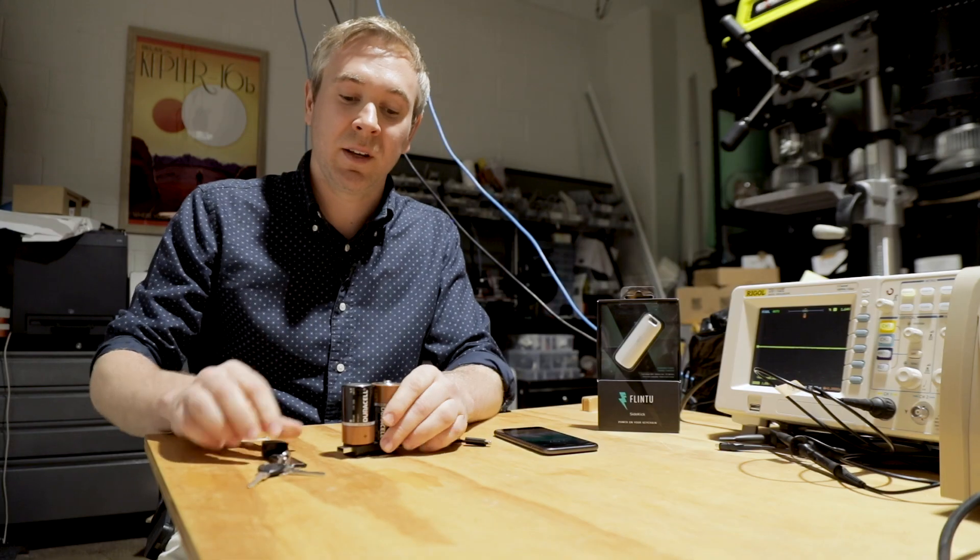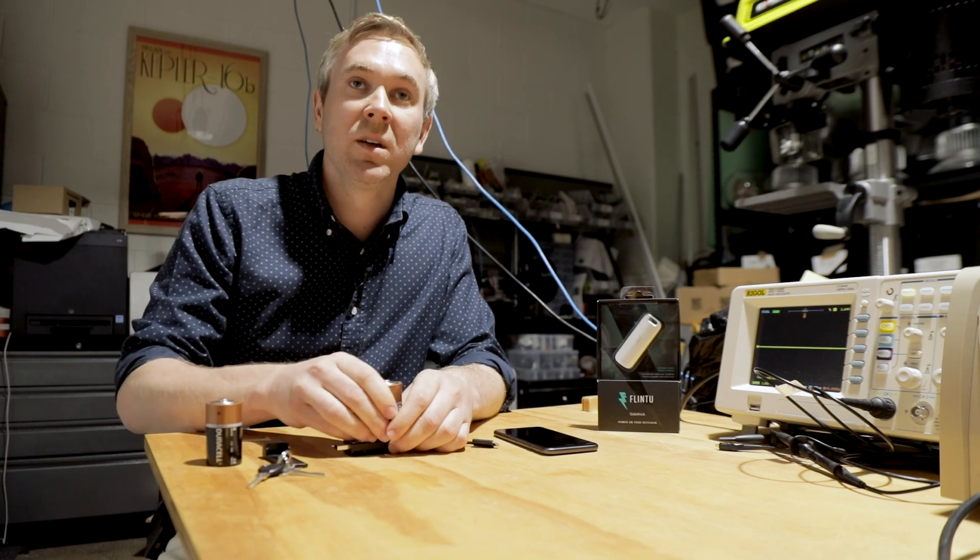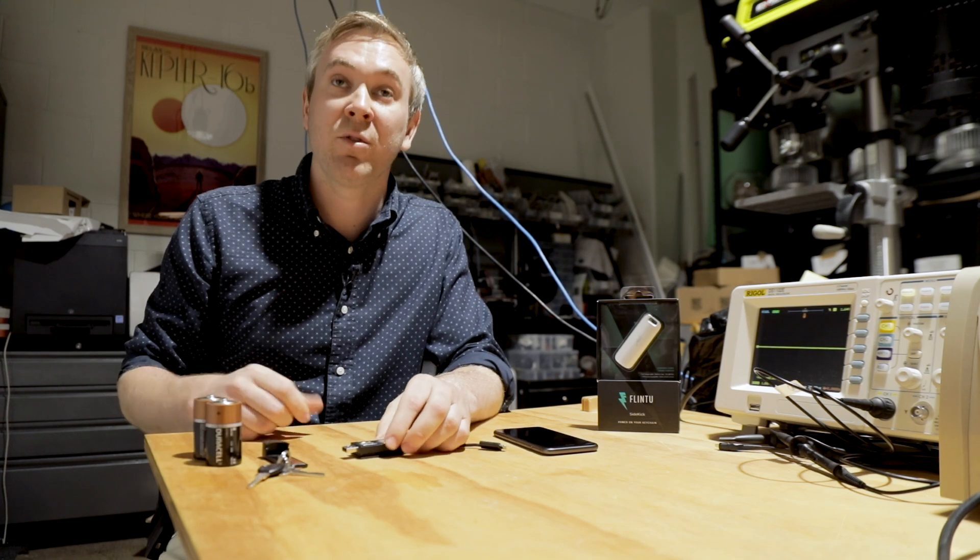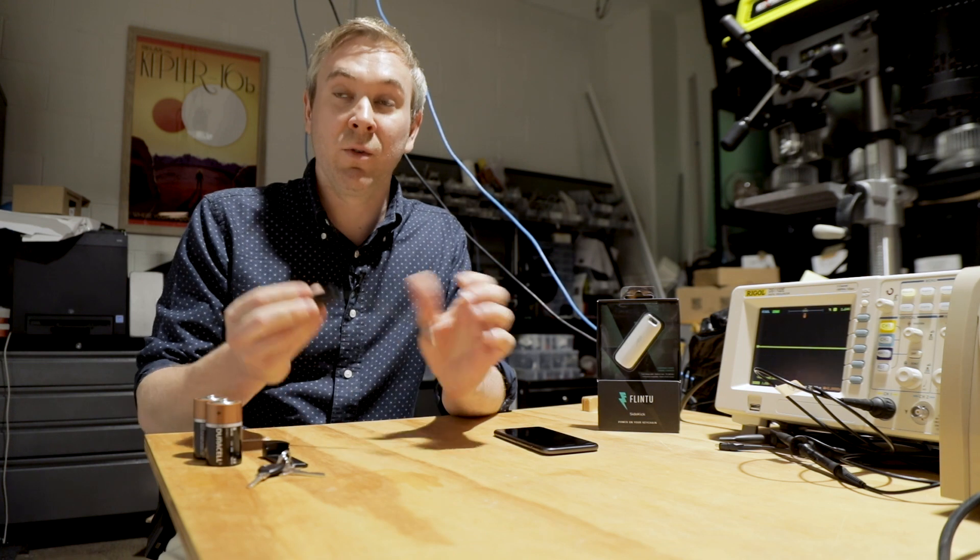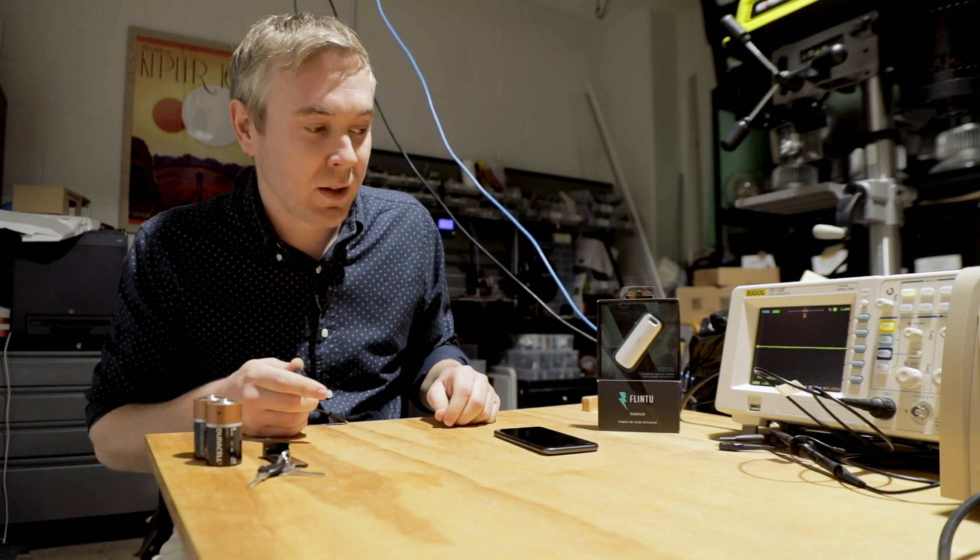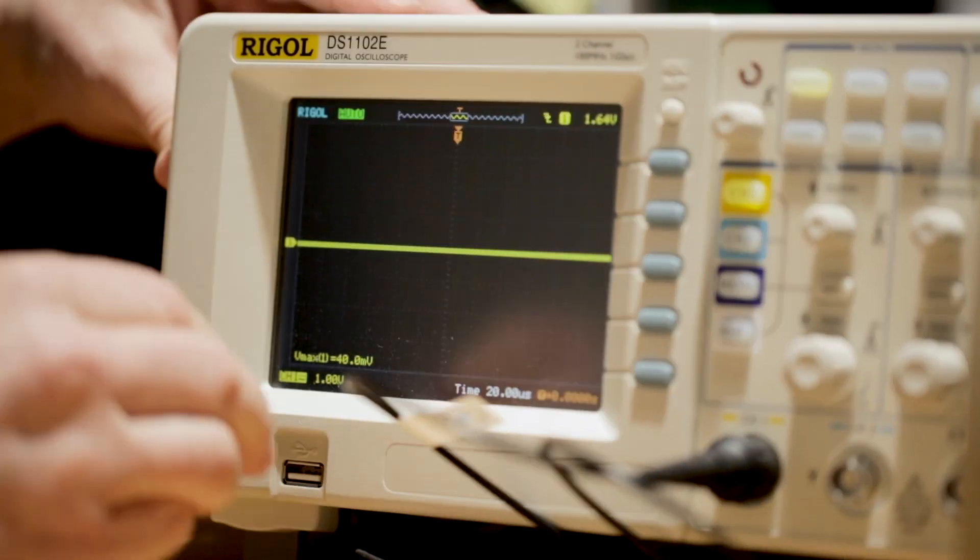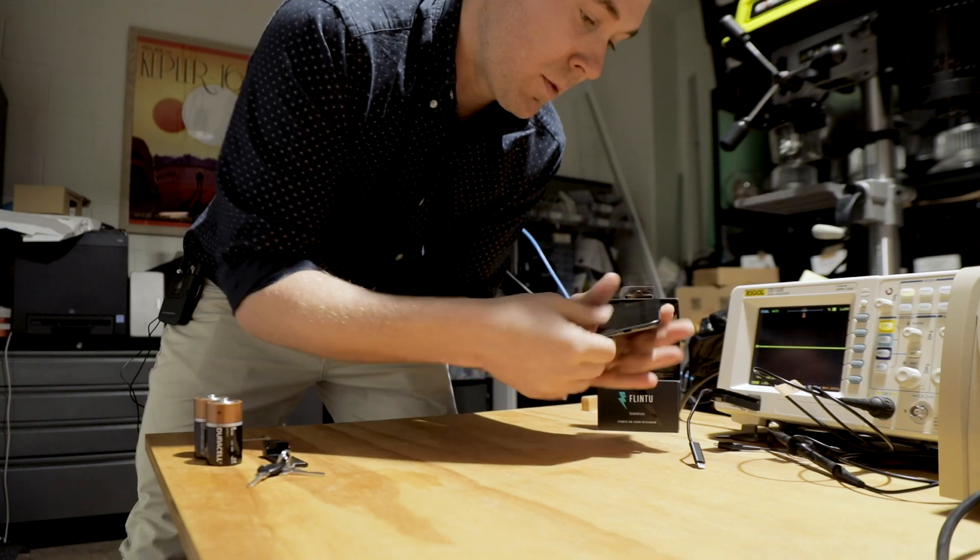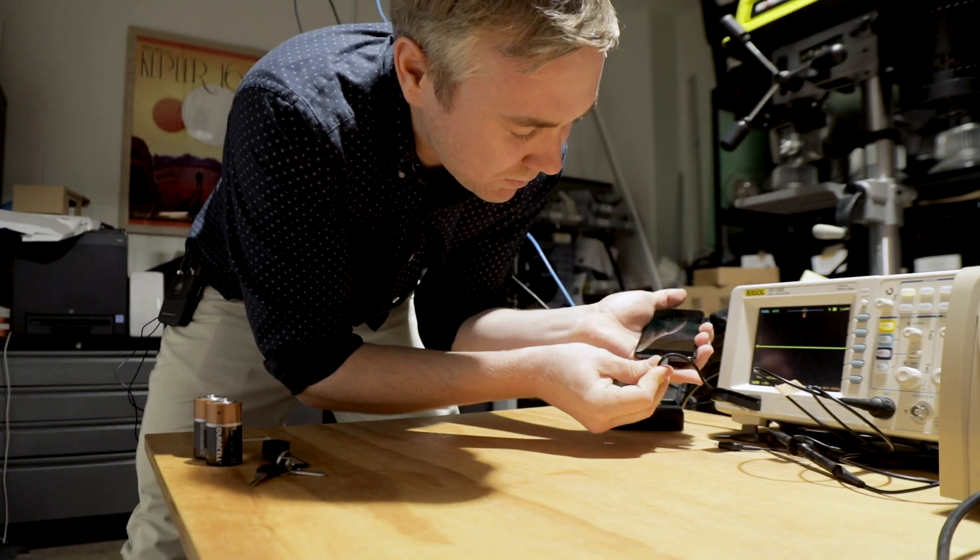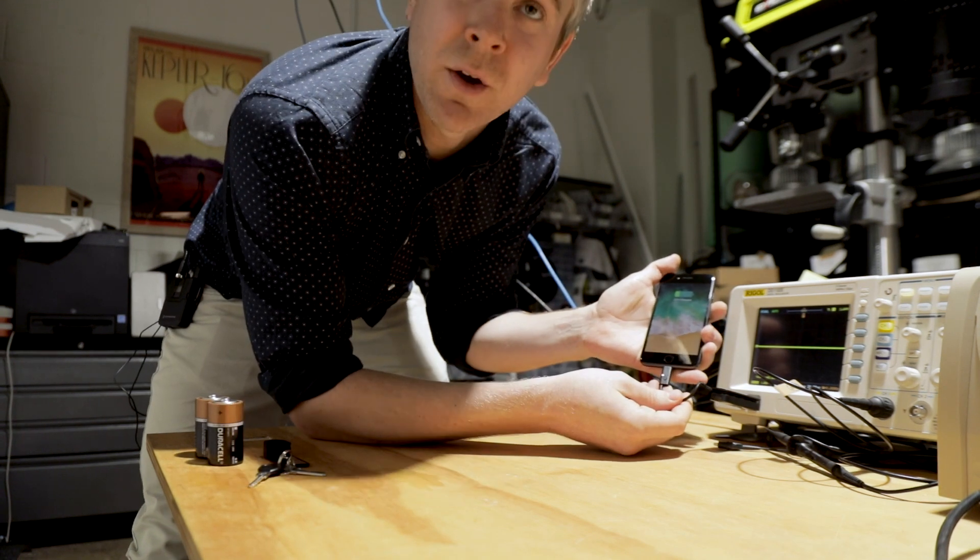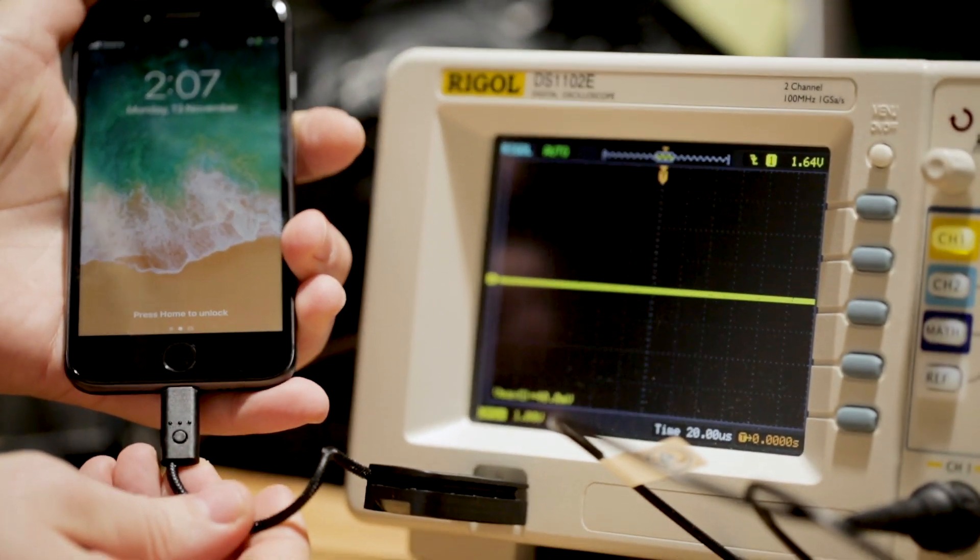The other feature of Sidekick is it also functions as a cable. So if you're at your friend's house and say they're an iPhone user, an Android user or vice versa, you've always got a cable on you. Let's try this oscilloscope that we've set up here. And there you go, you can see we're charging from the oscilloscope.